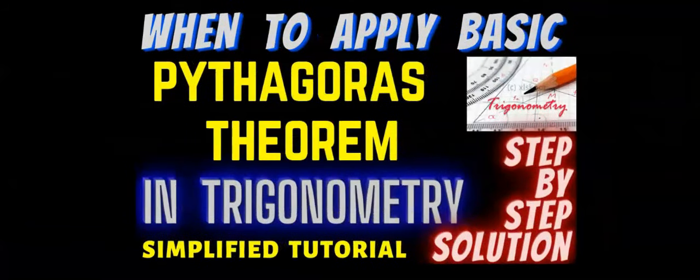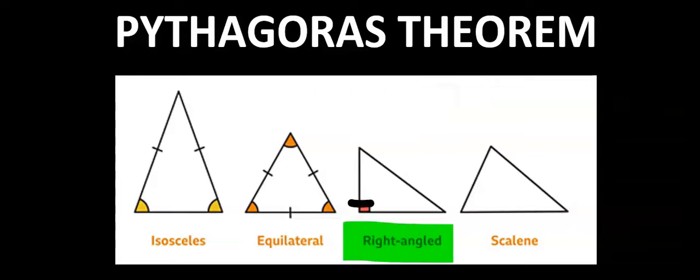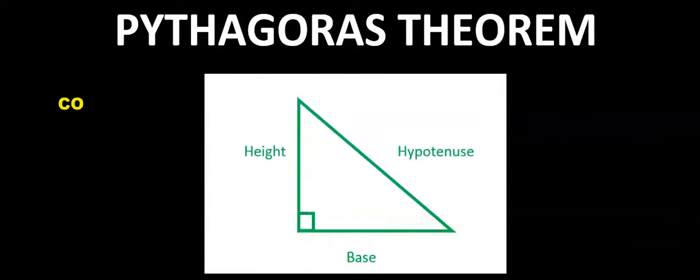When are you expected to apply Pythagoras' theorem? Number one: the triangle must be a right-angled triangle — that is, one of the angles must be 90 degrees. Number two: to apply Pythagoras' theorem...